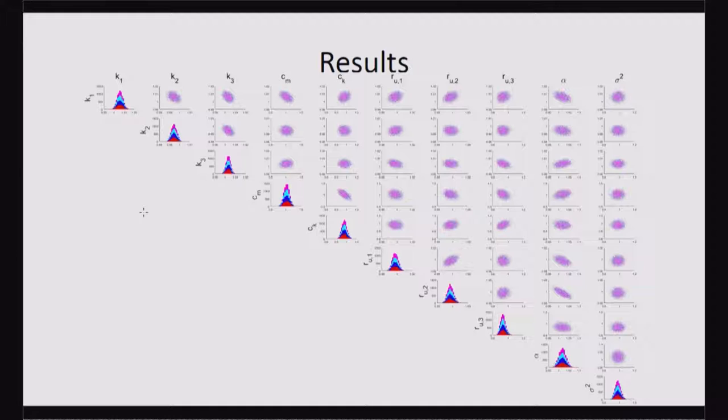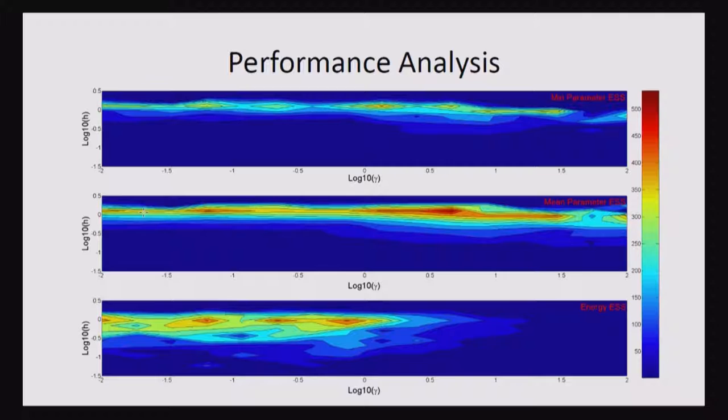A very interesting trade-off that we observe is when we look at the expected sample size of different quantities, one is the states themselves, and this is the min and the mean, and these were done over 1,000 posterior samples.